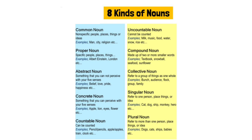Fourth, we have concrete noun. A concrete noun is something that you can perceive with your five senses. Example: apple, lion, ice, flower — things which you can feel when you touch them, and which are visible to our eyes.